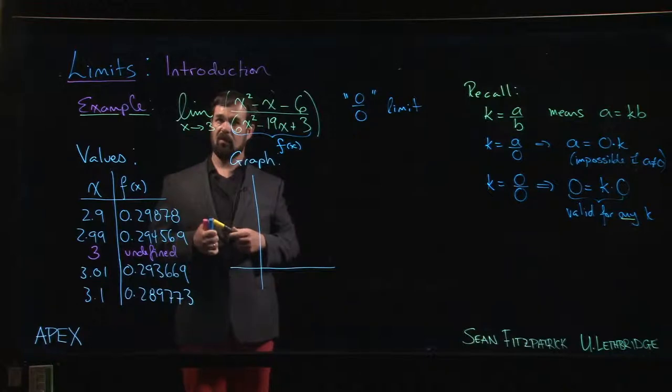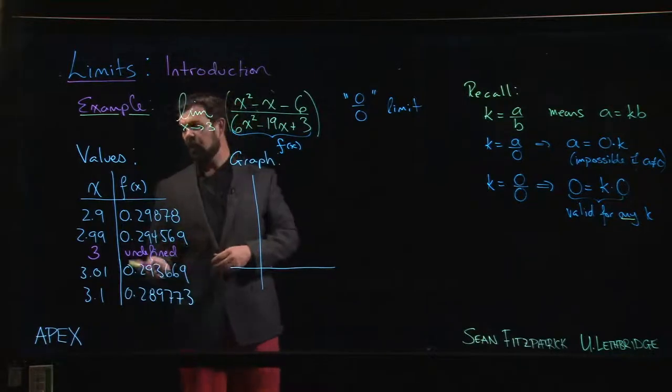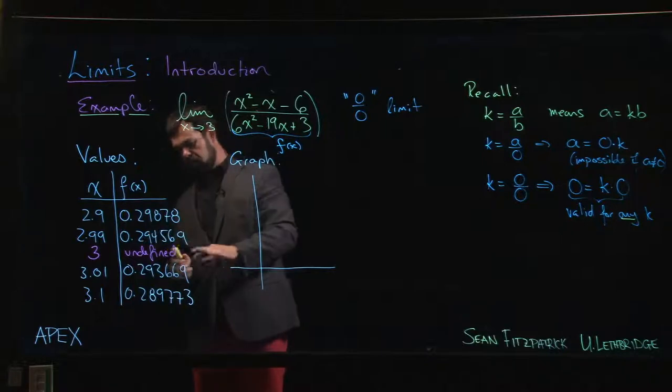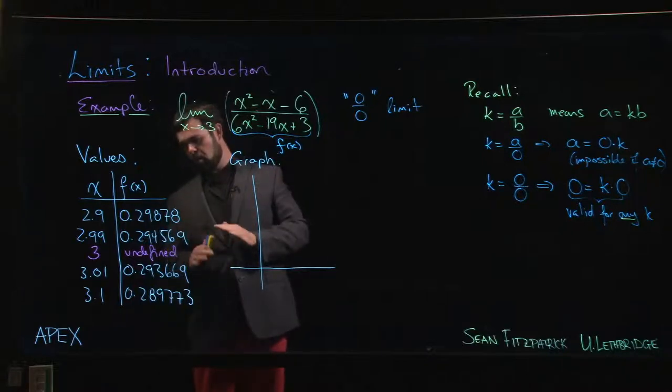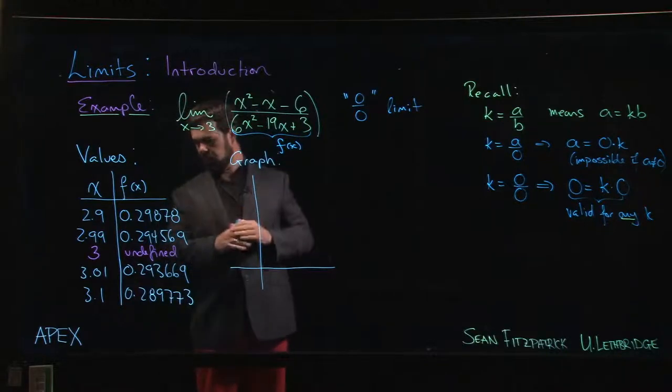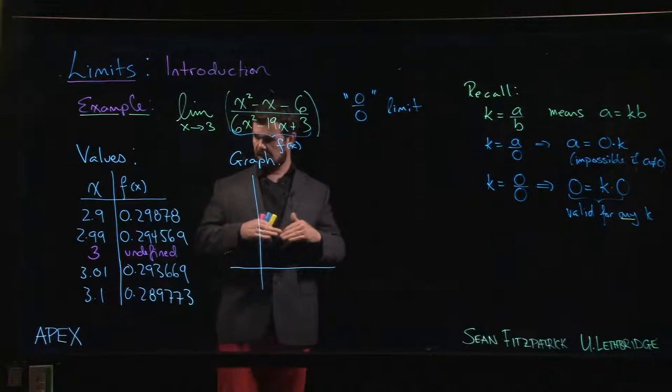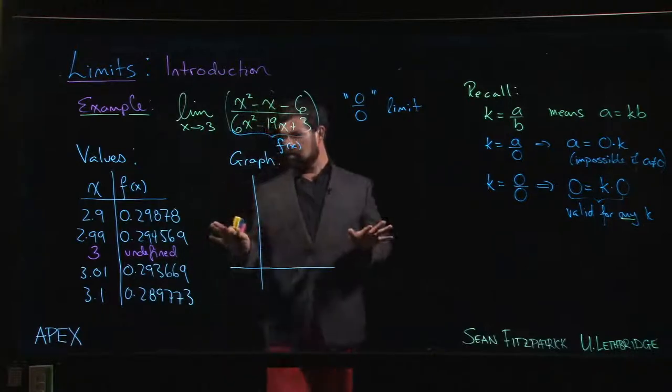The table of values certainly gives you some information. You can look and see, yeah, heading towards 2.9 something, somewhere between 2.93 and 2.94, somewhere in that neighborhood. But we're not quite sure.